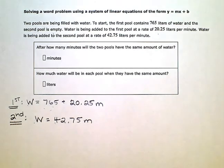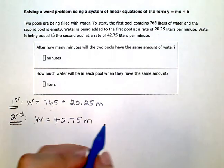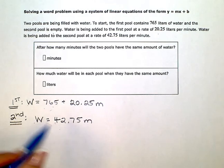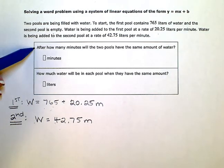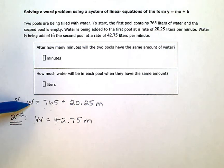So I'm going to write a new equation setting these two equal. My question here is asking me, after how many minutes will the two pools have the same amount of water? So I'm going to set those two equal, because I want to know when they will be the same.